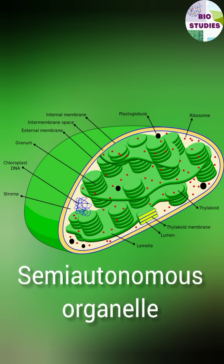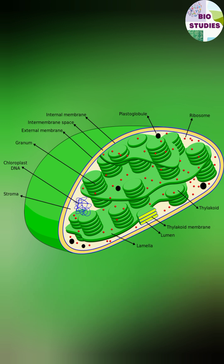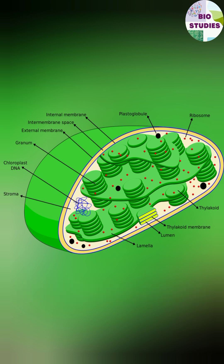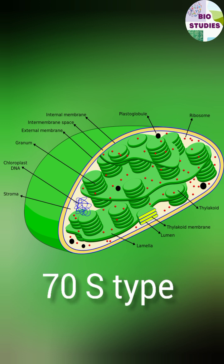Chloroplast is a semi-autonomous organelle, meaning it has its own DNA and ribosomes. The ribosomes of chloroplasts are known as plastidoribosomes and they are of the 70S type.